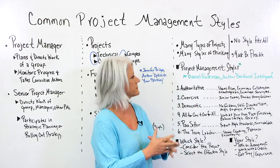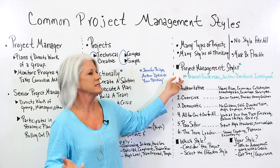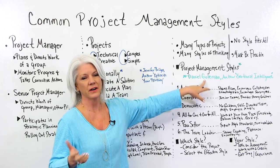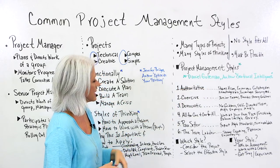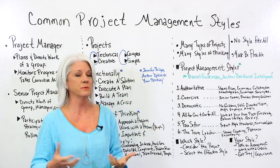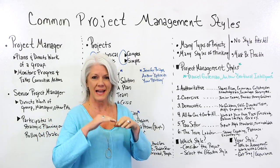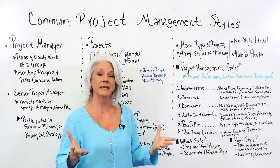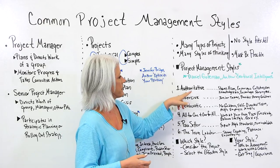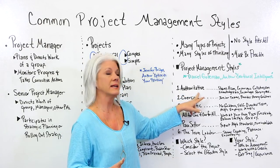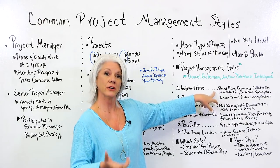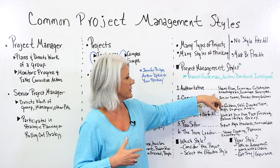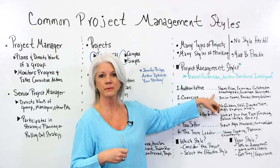There are project management styles, and one reference I love is by Daniel Goleman, the author of Emotional Intelligence. He outlined specific types of project management styles. There's the authoritative — great with sharing a vision, encouraging others to collaborate with each other. The authoritative is generally very knowledgeable and encourages people's strengths.